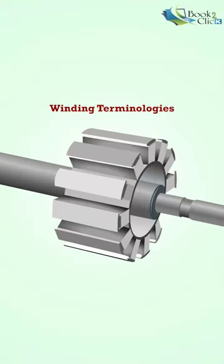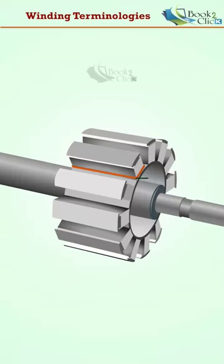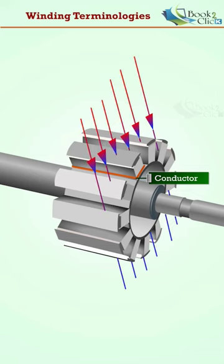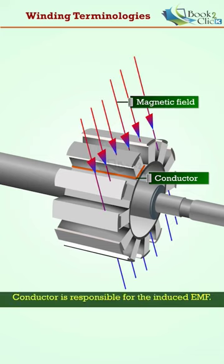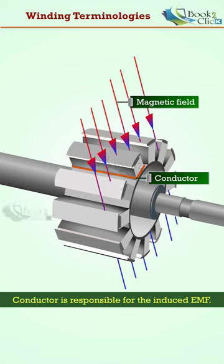Winding Terminologies. A conductor is a part of copper or aluminum wire under the influence of the magnetic fields, and it is responsible for the induced EMF.